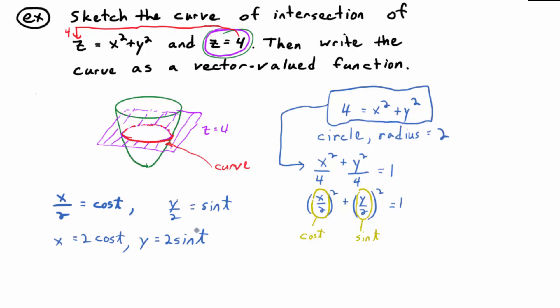But you've got to have a third component to tell that the curve is at a height of four, a constant height of four. So what's the parametric equation for z? Yeah, that's not going to change.